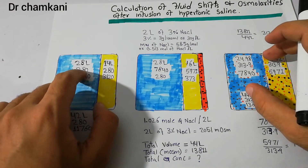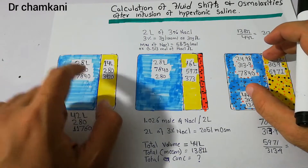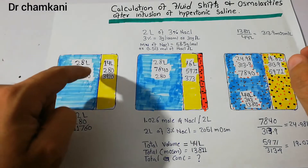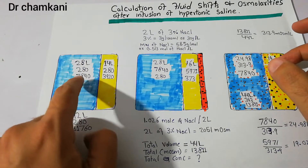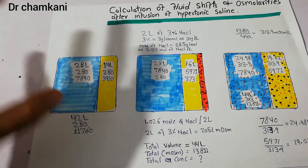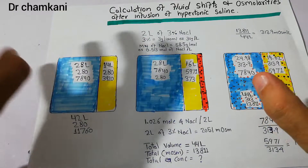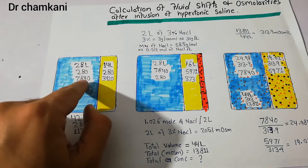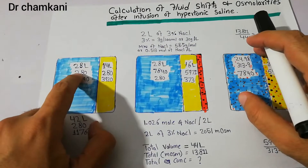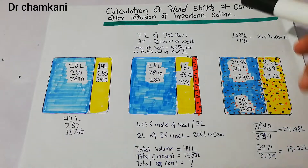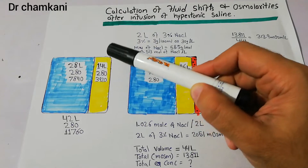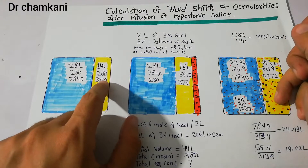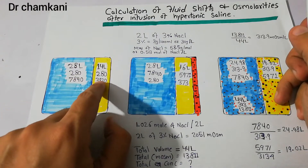The osmolarity of the intracellular compartment is around 280 milliosmoles per liter. So the total osmolarity of the intracellular compartment is 28 × 280 = 7840 milliosmoles. For the extracellular fluid compartment, there are 14 liters of fluid, osmolarity is also 280 milliosmoles per liter, giving 14 × 280 = 3920 milliosmoles.